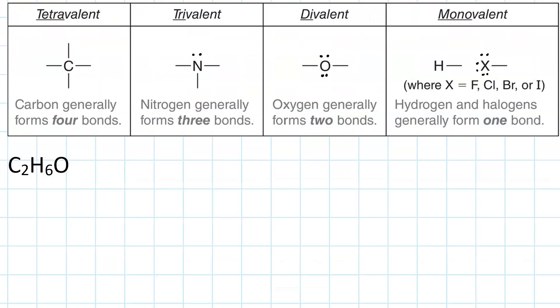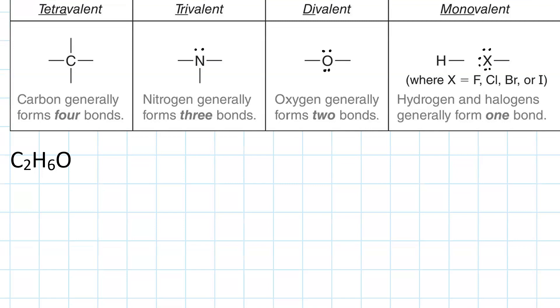Now back to C2H6O. There are two ways we can draw the skeleton, or backbone, of this molecule. We can have carbon joined to carbon joined to oxygen.